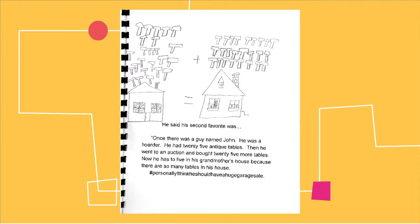He said his second favorite was once there was a guy named John. He was a hoarder. He had 25 antique tables. Then he went to an auction and bought 25 more tables. Now he has to live in his grandmother's house because there are so many tables in his house. Hashtag personally I think he should have a huge garage sale.